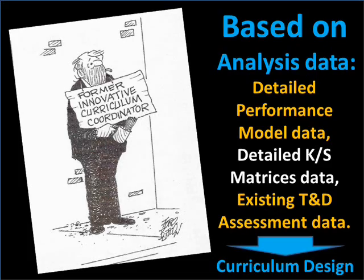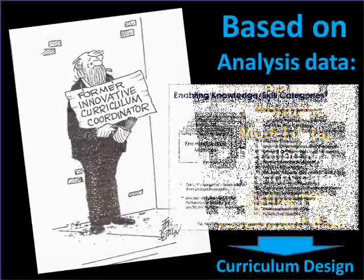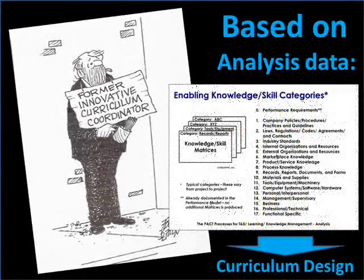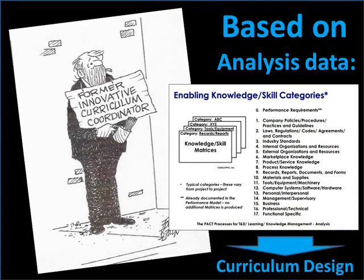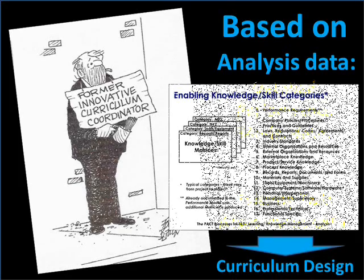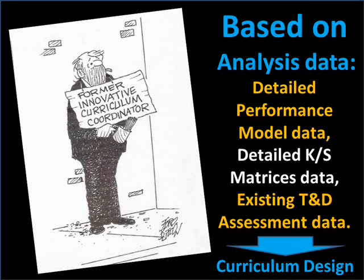The performance models lead to a detailing of specific knowledge and skills. I use seventeen categories of knowledge and skills to systematically derive those enablers. We also look at the existing training and development to assess whether it has any reuse potential — either as-is, after modification, or not appropriate for this particular situation.